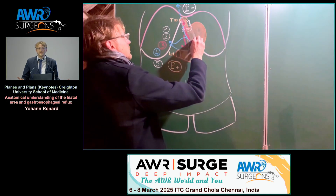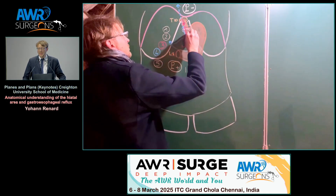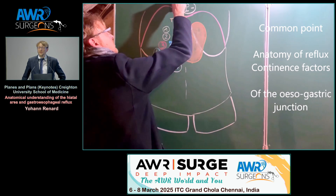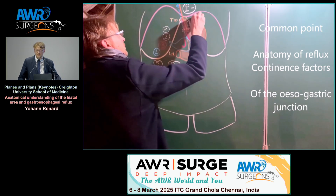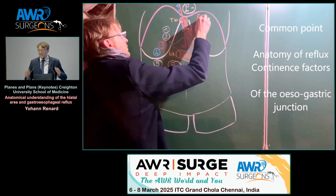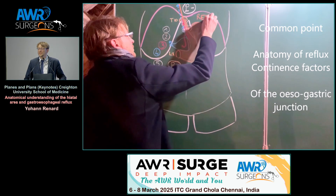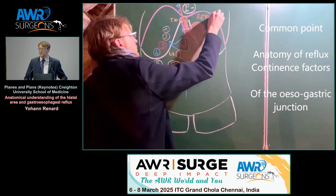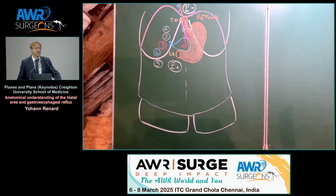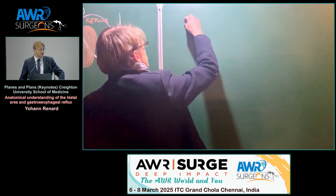As you can see, it is a very complex anatomy. We will find here a very common disease — the reflux. And we will explain with anatomy the continence factors of this reflux at this esogastric junction.